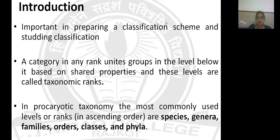In prokaryotic taxonomy, the most commonly used levels or ranks are species, genera, families, order, classes and phyla. These names are arranged in ascending order — the ground level is species and when you go above in the taxonomy, the highest level is phyla.